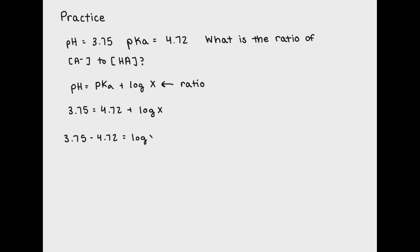3.75 minus 4.72 raised to the 10 will give us our ratio of conjugate acid-base pair.